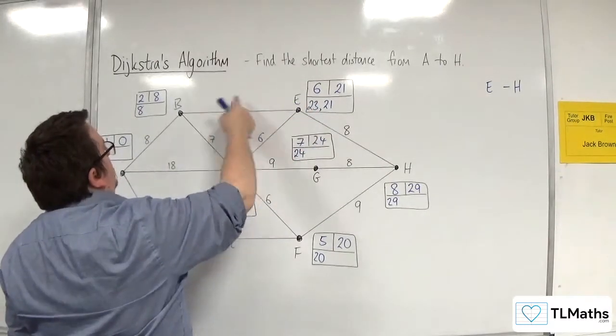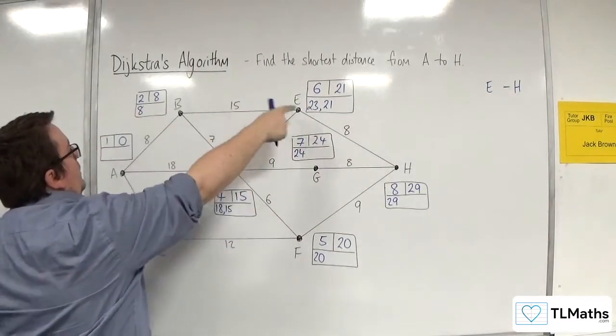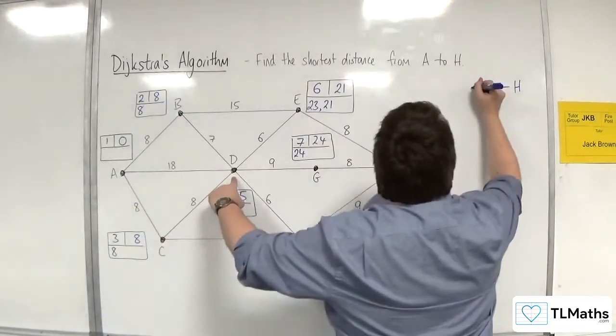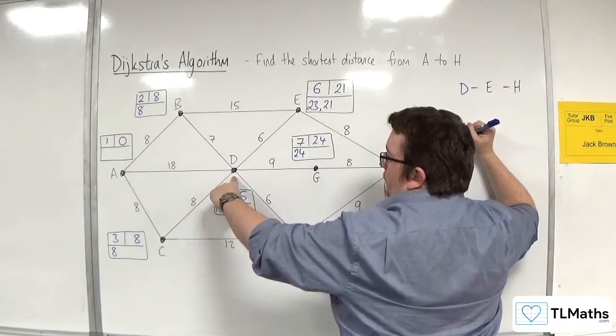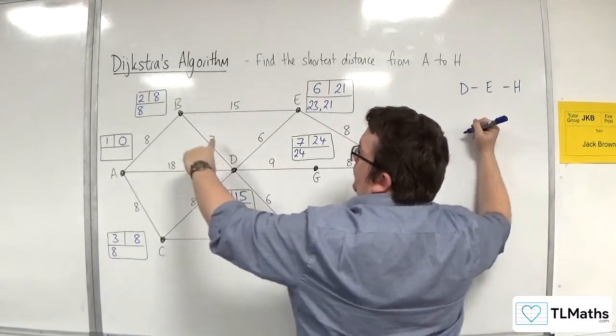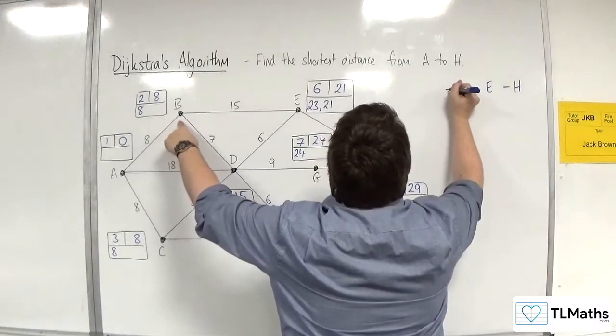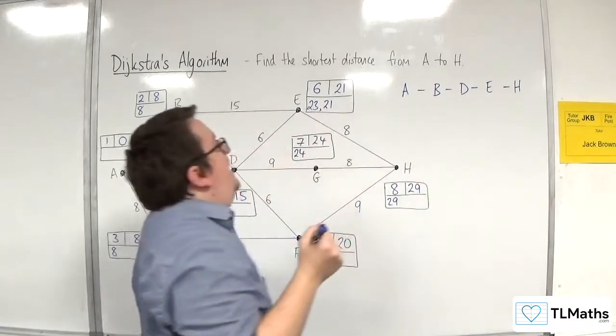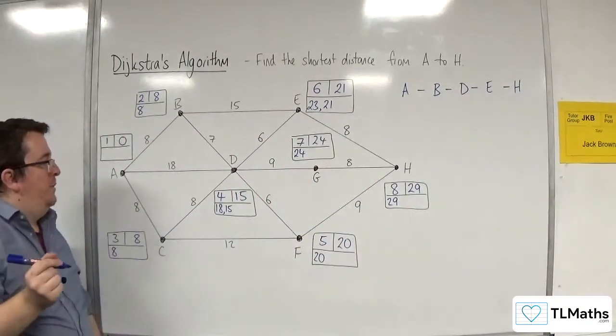So H to E is 21, then 21 take away 15 isn't 8, so 21 take away 6 gets me to D, so that's right. So D, then 15 take away 7 gets us to B, and then take away 8 gets us to A. So A, B, D, E, H is one of the possible routes.